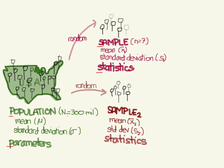We'll come back to this in the next video. In this one, we talked about populations and samples, we talked about parameters and statistics, and we talked about what inferential statistics does — using a sample to infer something about the population. I'll see you in the next video.